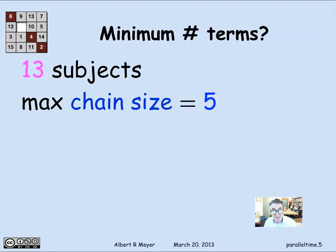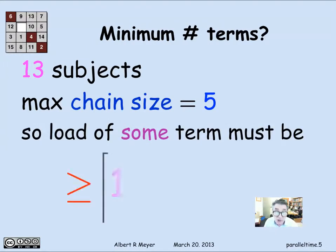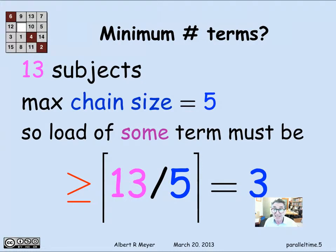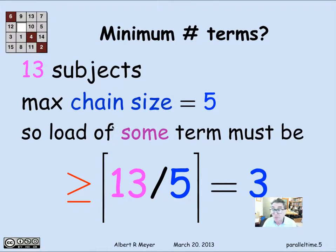The maximum chain size was five, so it was going to take at least five terms. That means you have to distribute these 13 subjects among five terms. There has to be some term that has at least the average number of subjects — namely 13 divided by 5 — rounded up because it has to be an integer. So the minimum number of courses per term is ceiling(13/5) = 3.